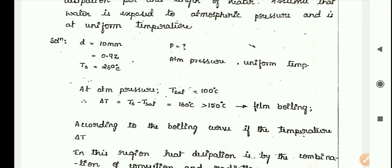According to the boiling curve, if the temperature is in this region, heat dissipation is by the combination of convection and radiation. Since Delta T is more than 150 degree Celsius, it's film boiling. If it is below 150 degrees it's nucleate boiling.